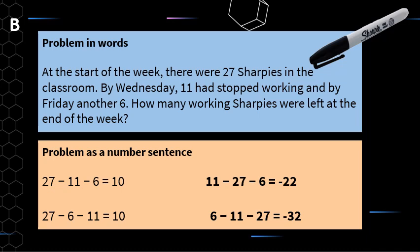Here we've got a keyword: 'left.' We've started off with 27 Sharpies and gradually throughout the week some of them stopped working. The order of the numbers does matter here because I'm dealing with a subtraction problem. The first number in the number sentence needs to be the number of Sharpies I started with — so I'm starting with 27.